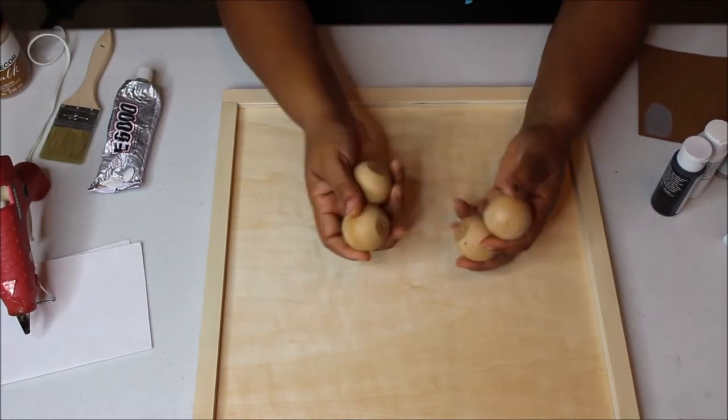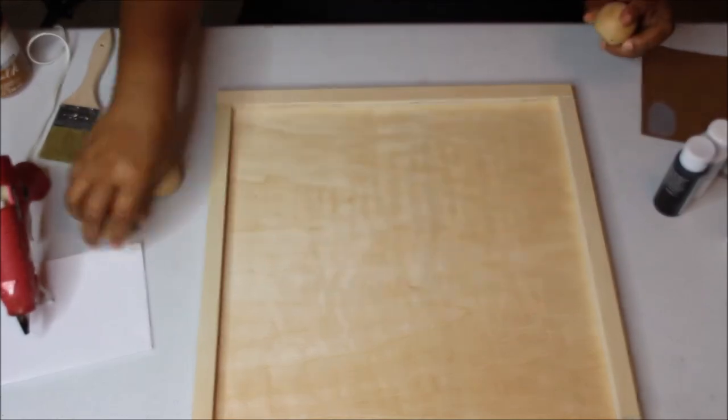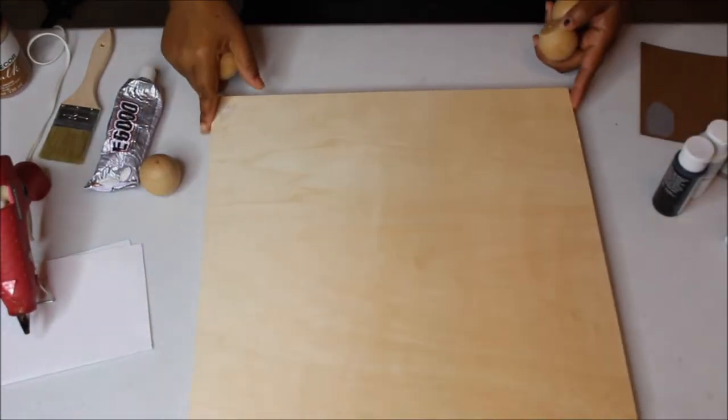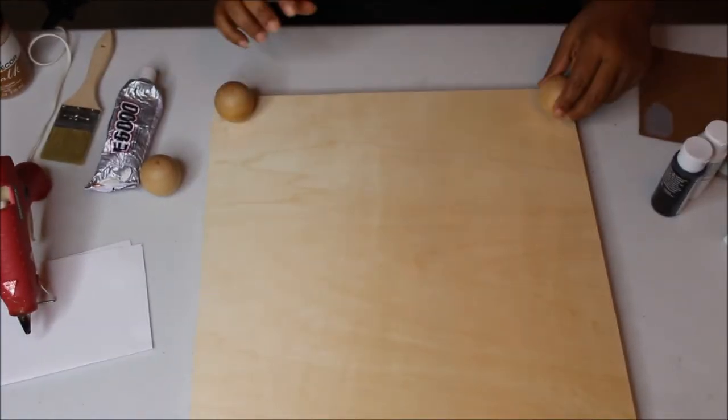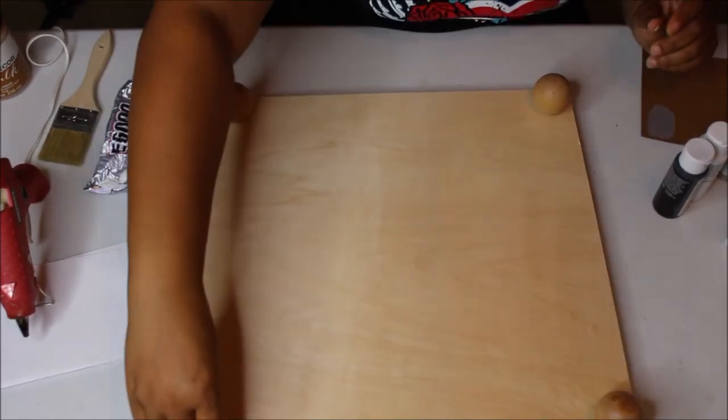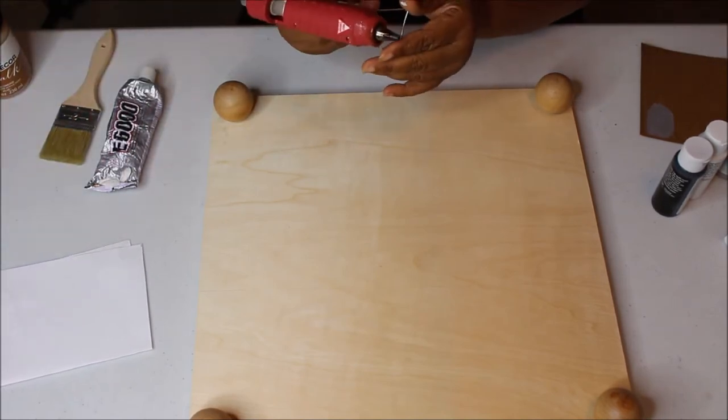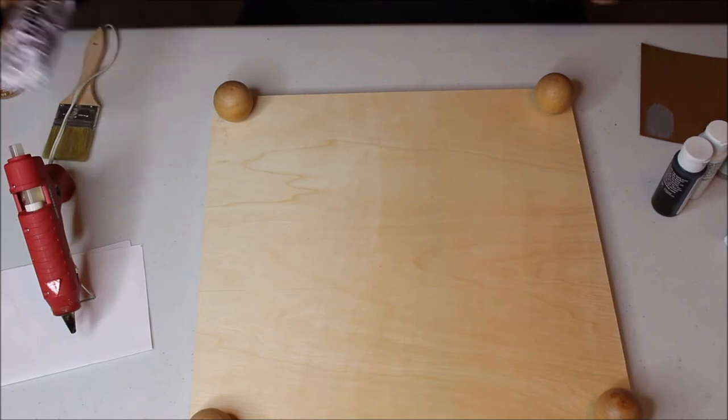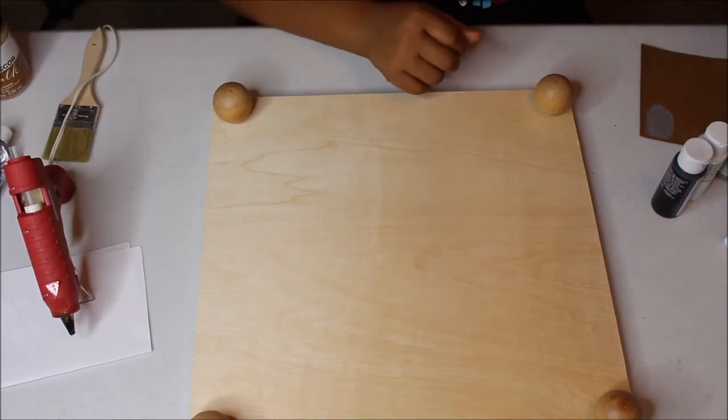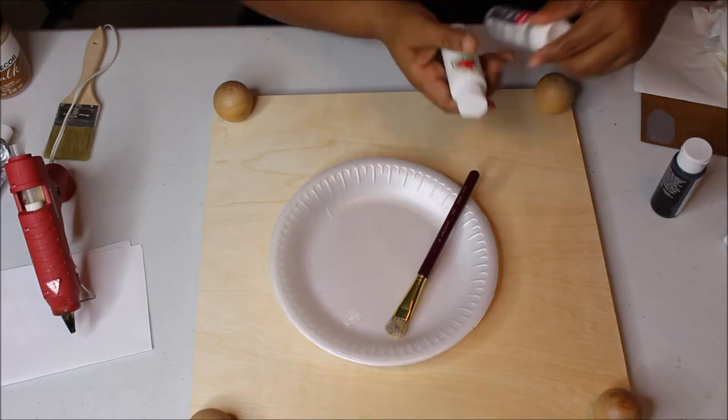I picked up these wooden balls or knobs from Michaels years ago. They were in my stash and they were like 50 cents a piece. I pulled those out because I knew they would work as a base or feet for the tray. I'm going to use some E6000 to attach them.